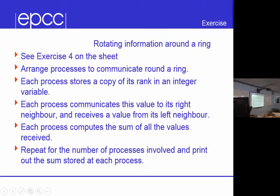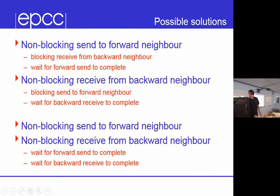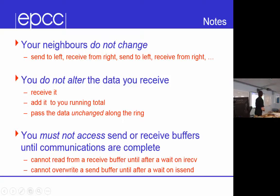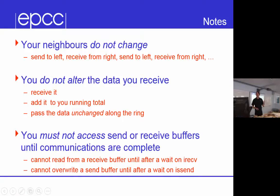There are things people always get wrong. First: your neighbors do not change. You don't send to one neighbor and receive from another alternately — you send to the person on the left and receive from the right every time. Your neighbors don't change during the iteration. Second: you do not alter the data you receive. You're not passing on the running total or your age after initialization — you receive the data, add it to your running total, and pass it on unchanged around the ring.